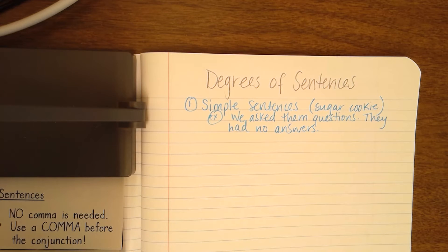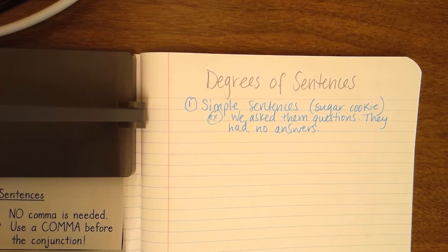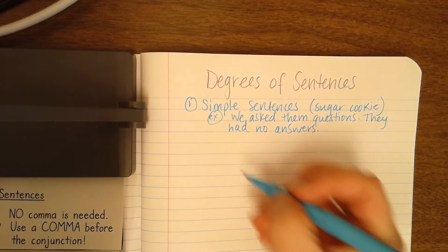Very simple. These sentences could probably be a little more complex and advanced, but they're just plain and straight to the point. We understand what's going on: 'We asked them questions. They had no answers.' Think of simple sentences as the ones you probably read early on — 'I saw him run,' 'He likes cookies,' 'Let's play ball.' Think about your plain sugar cookie: it's okay to have, but if you had your choice, you'd probably want more. Same with simple sentences — they're okay every once in a while, but we want to make them a little bit better and more enjoyable.